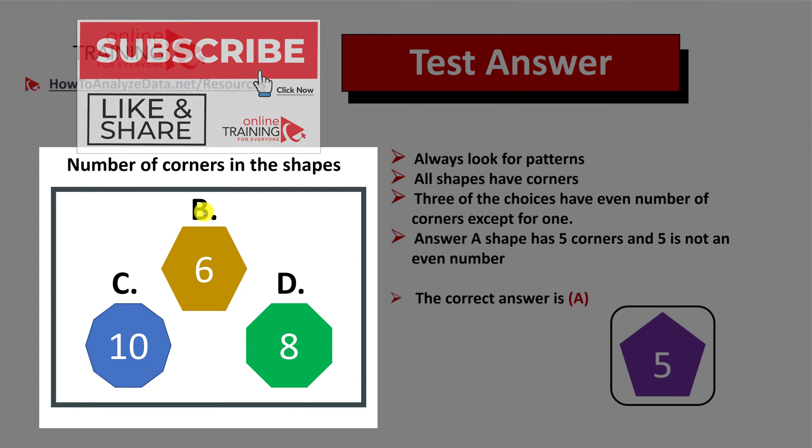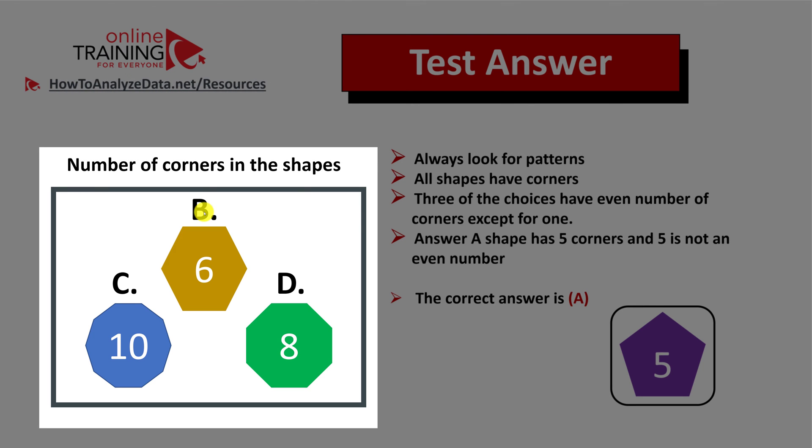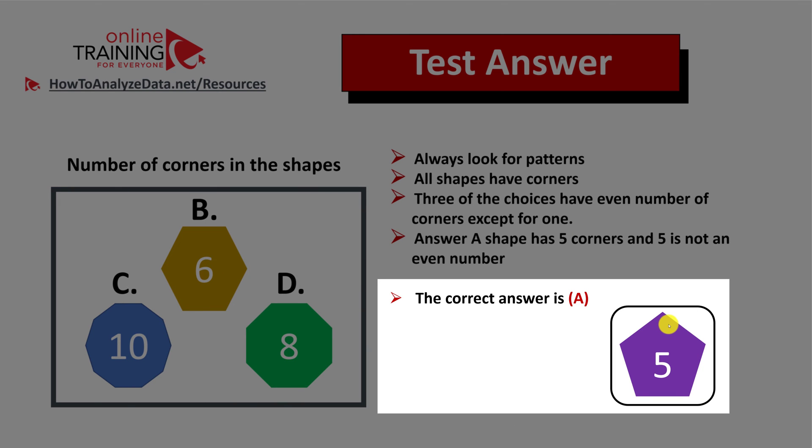If you look closely, three choices have even numbers of corners except for one. Choices B, C, and D have six, ten, and eight corners respectively. And choice A only has five corners.